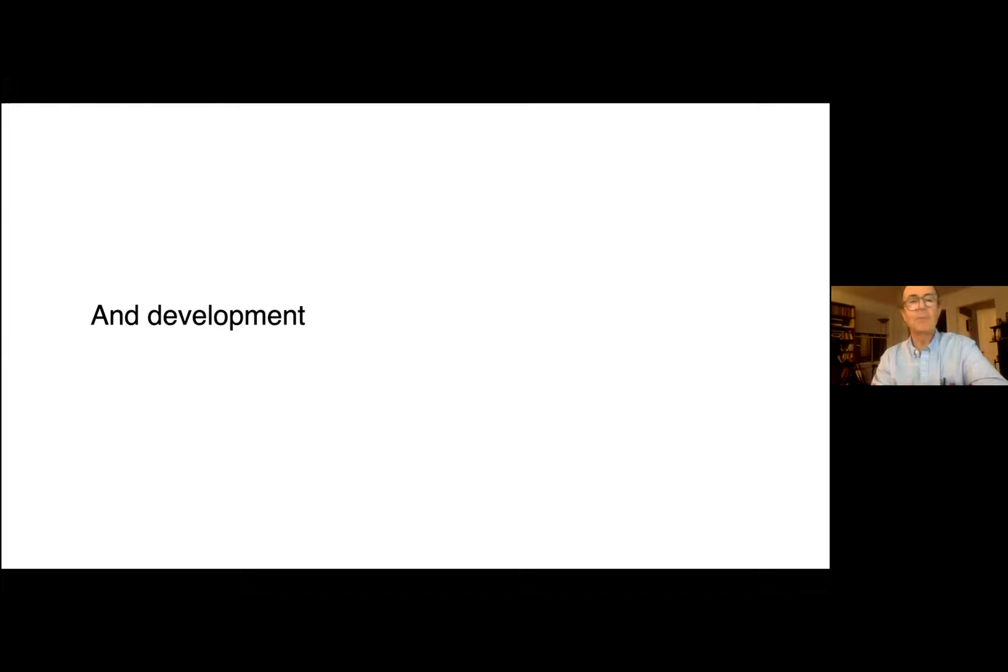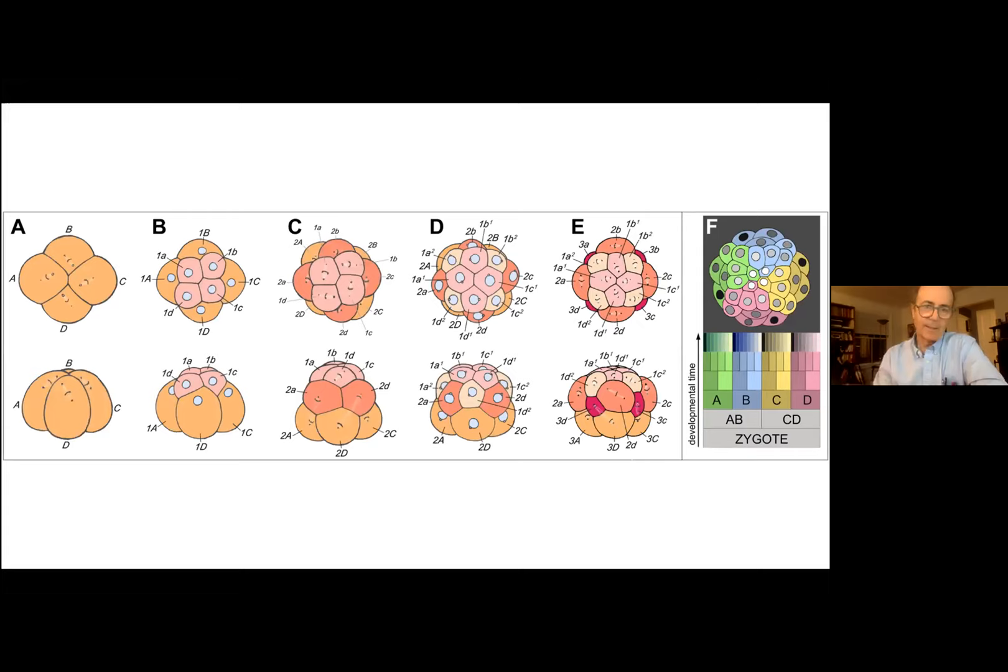The same theme, reproduction, self-replication with variation, is also the key to development of the embryos into organisms. They start with a single egg, fertilized egg, and then it goes through many cycles, and at first the products are all the same, but then they become differentiated into many, many types of cells to make the final organism.